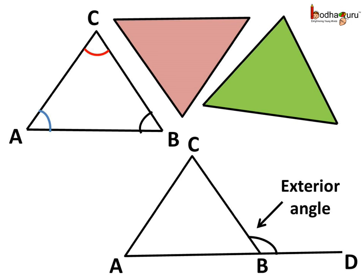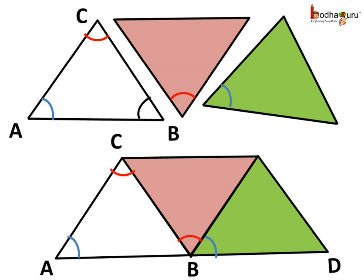Now we make two more triangles which are identical to triangle ABC. We try to fit the interior angles — say angle A and angle C of these two triangles — into the exterior angle CBD of the first triangle. Look at what we see: the exterior angle is the sum of the two interior angles of triangle ABC.